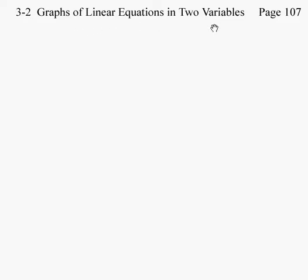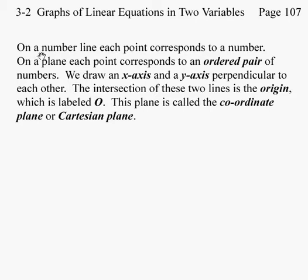We are going to graph linear equations in two variables. Let's start out by reminding you that on a number line, which is one-dimensional, each point corresponds to a number. On a plane then, each point corresponds to a pair of numbers, which we call an ordered pair.